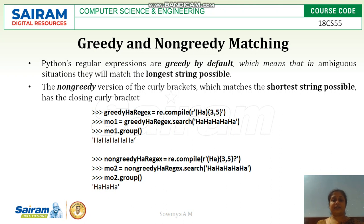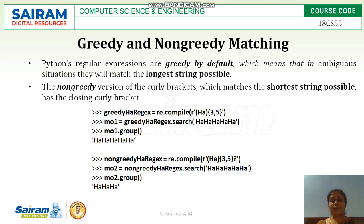In greedy matching, when you write a pattern with curly braces containing two values, by default Python's regular expression matches the greatest value it can. For example, 'ha{3,5}' can match three, four, or five occurrences of 'ha'. By default, Python matches the higher value — five or four — whichever is greater. This is called greedy matching.